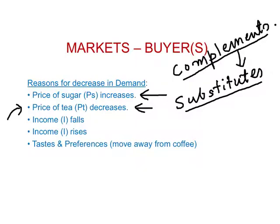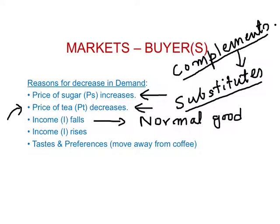Another reason for buying less coffee is when you have less money in your pocket — in other words, your income falls. If you have less money, you're going to buy less of everything. When this happens, coffee will be referred to as a normal good, because under normal circumstances, when you have less money you buy less of everything, including coffee. So a fall in income can be another reason for a decrease in demand.